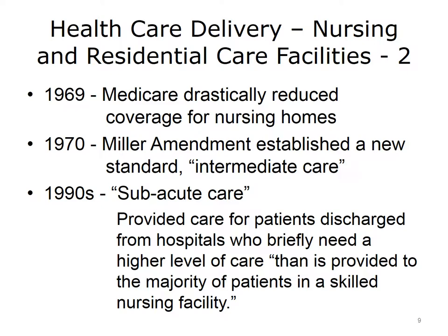A year later, the Miller Amendment established a new standard called intermediate care. Intermediate care facilities didn't require the same amount of skilled nursing or resources, thus requiring reduced levels of reimbursement. In the 1990s, another standard, subacute care, was defined to provide care for patients discharged from hospitals who briefly needed a higher level of care than that provided to a majority of patients in a skilled nursing facility. These distinct levels of care have been delineated primarily from a cost-effectiveness perspective.